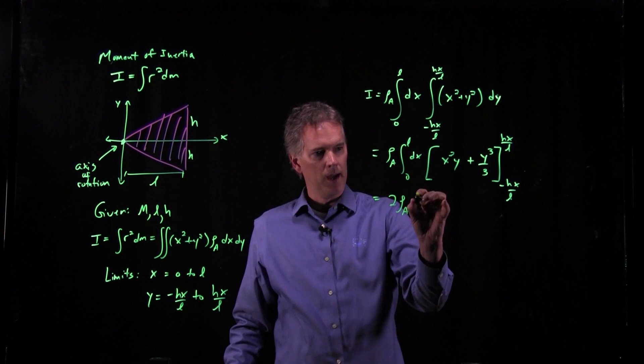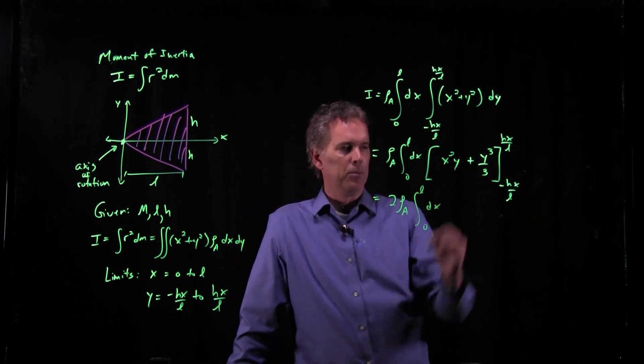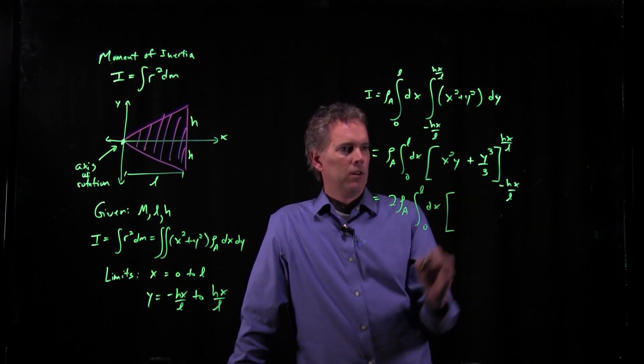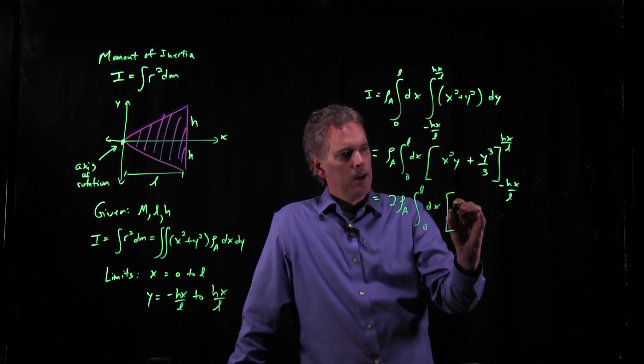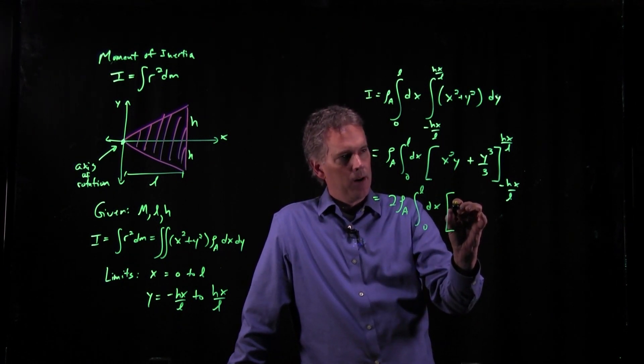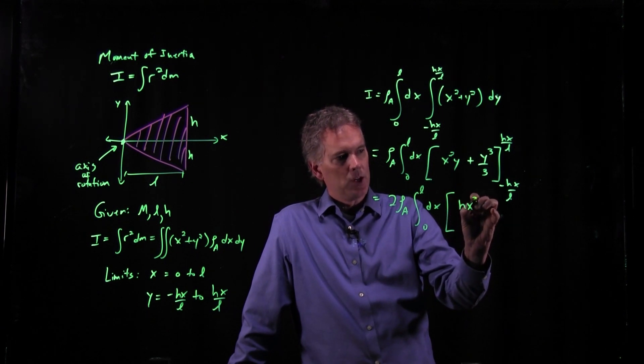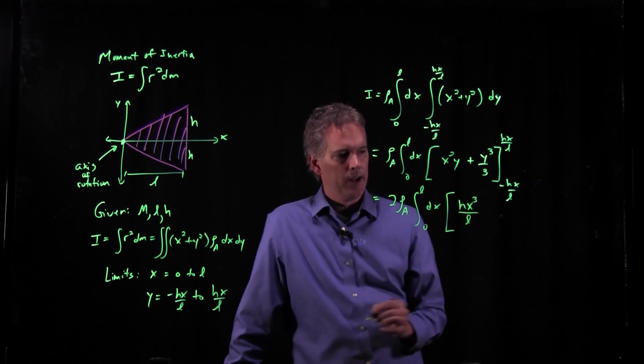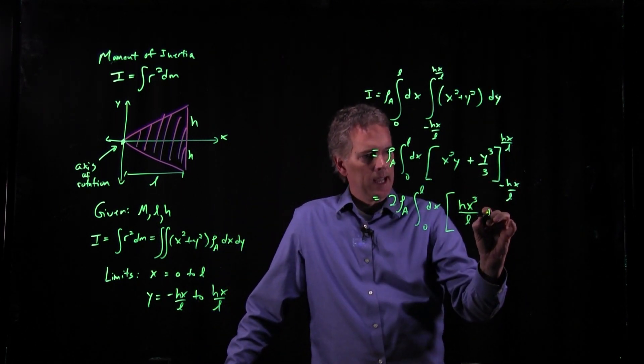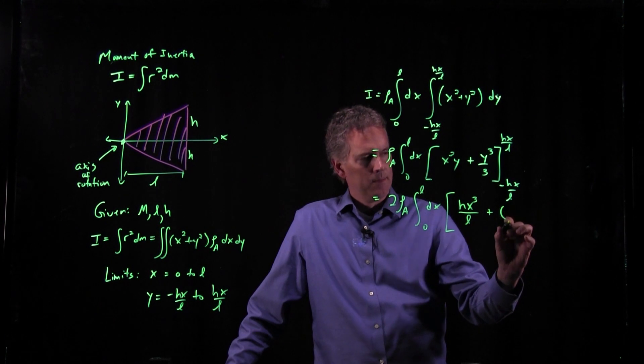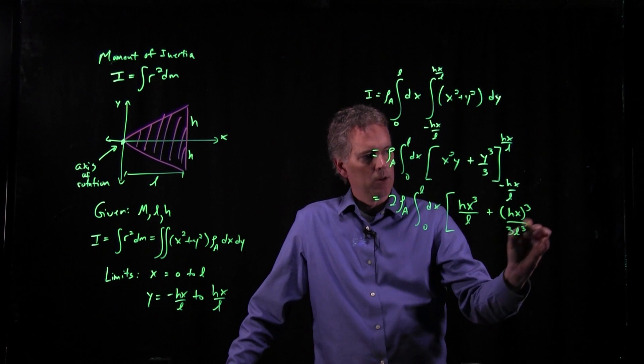And so we can put a 2 out in front. This becomes 2 rho_a integral 0 to L of dx. And now we only have to put one of these things in. If I put hx over L in here for y, I get x² times hx over L, which becomes hx³ over L. And if I put that into here, I get quantity hx³ over 3L³. And now we have to do the x integral.